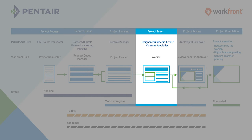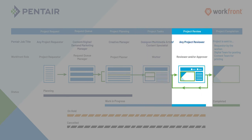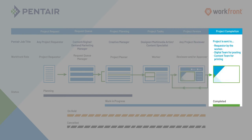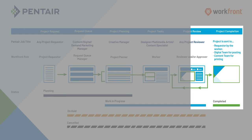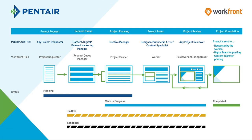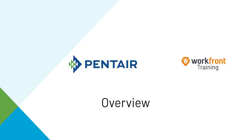In the worker step, the designer will grab the task assigned to them and create the asset. The asset will then go through a review and approval process that sometimes can take a few revisions. Once that process is complete, the project will then be sent to the requester and posted in the appropriate places. The project will then be marked as completed.